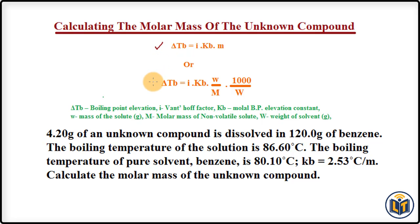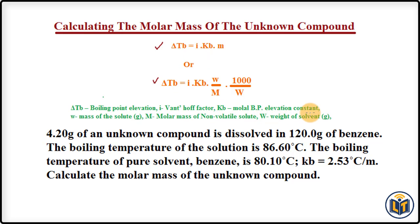The boiling point elevation formula is given here, along with another form of the same formula. Delta TB is the boiling point elevation, i is the van't Hoff factor, KB is the molar boiling point elevation constant, M is the molality, small w is the mass of solute, capital M is the molar mass of the solute, and capital W is the mass of the solvent.